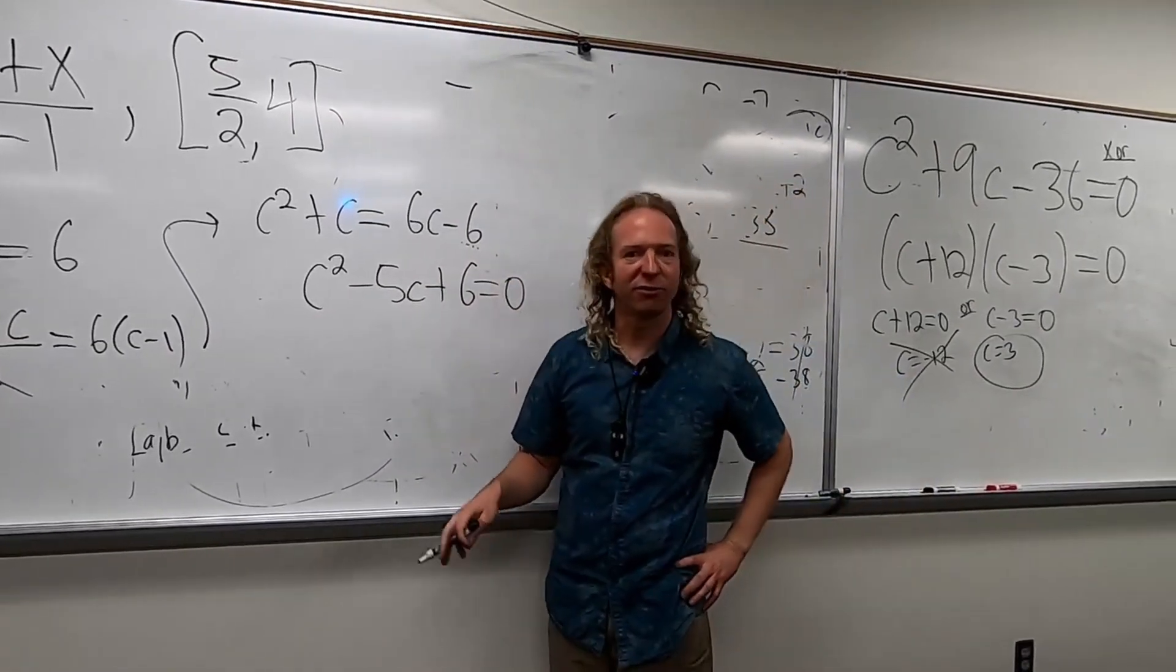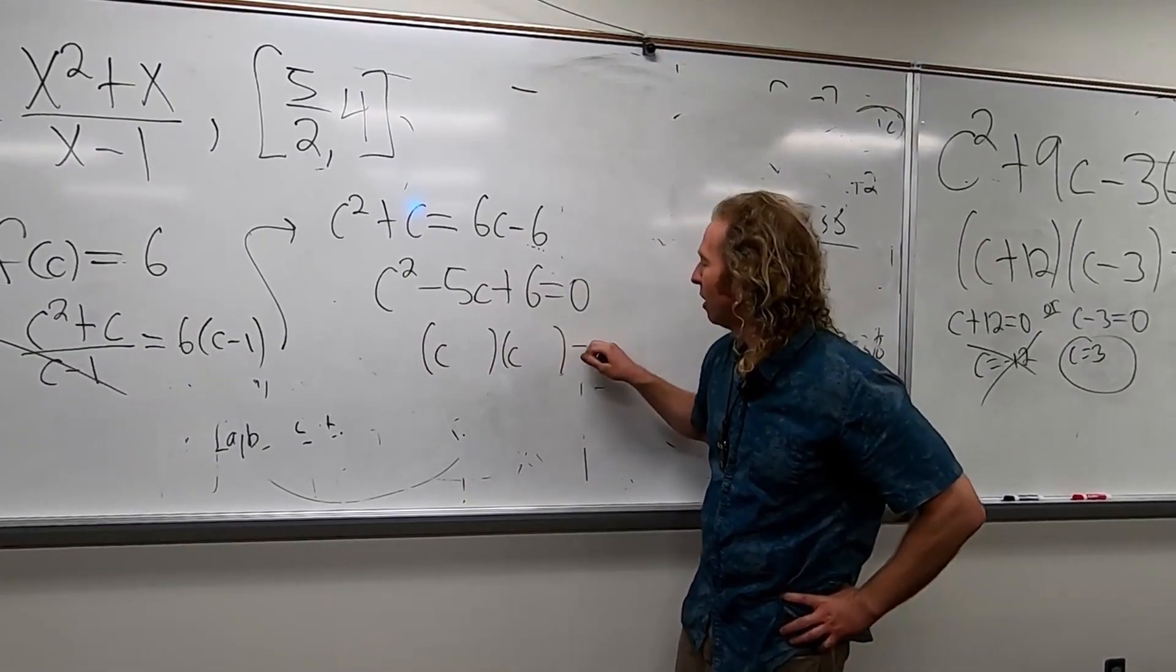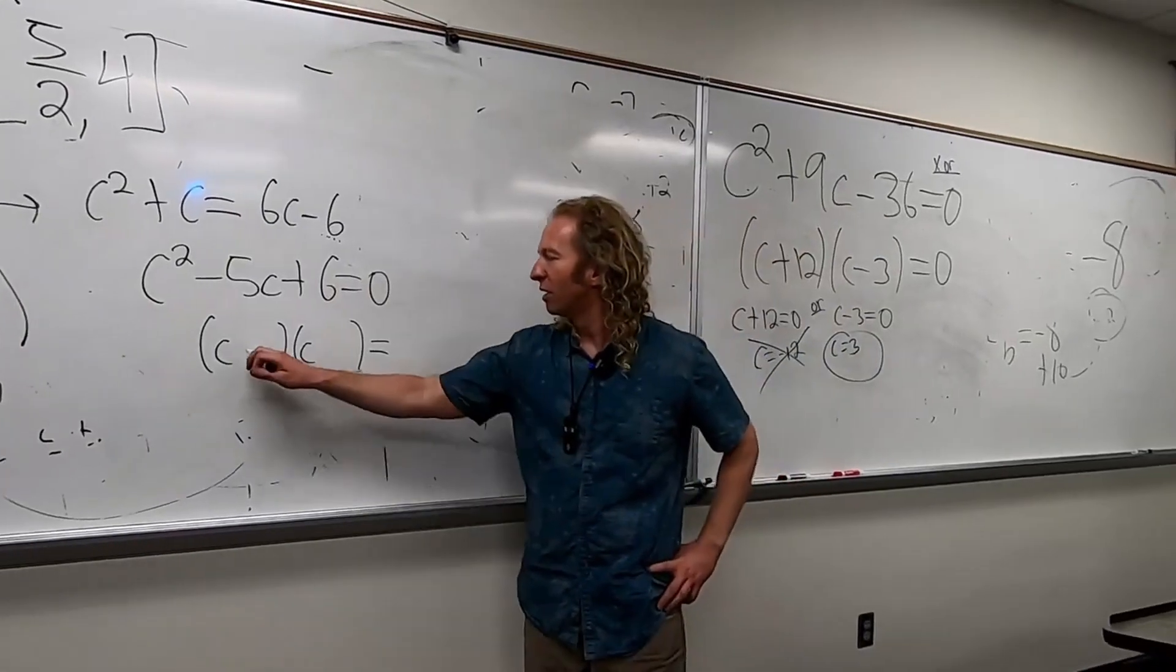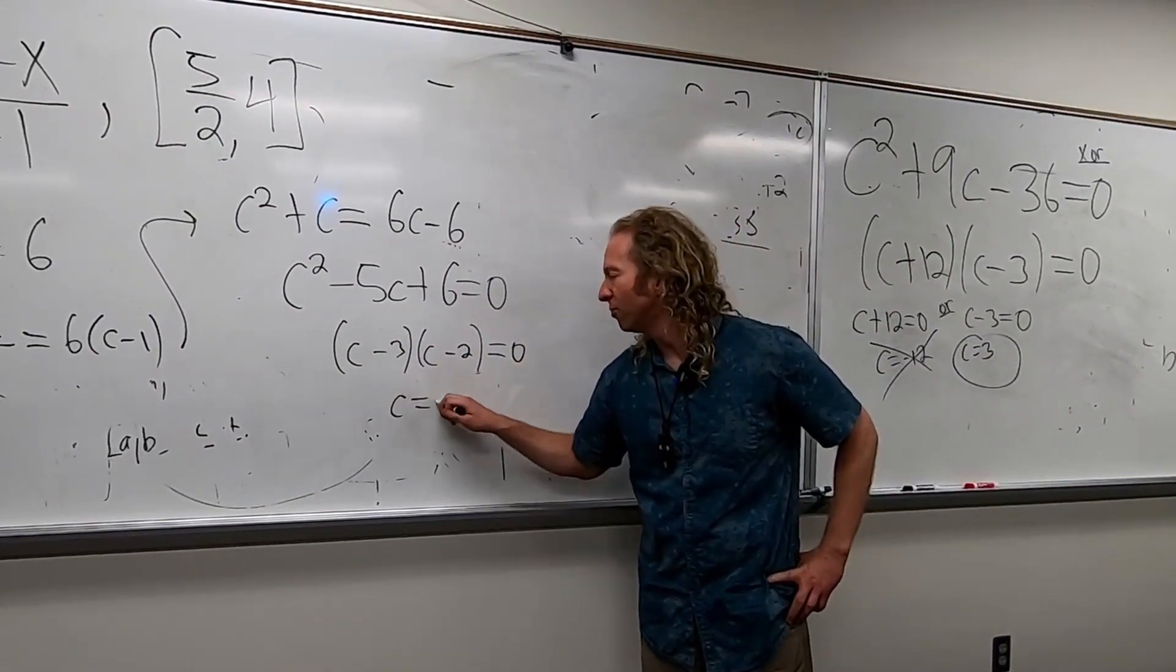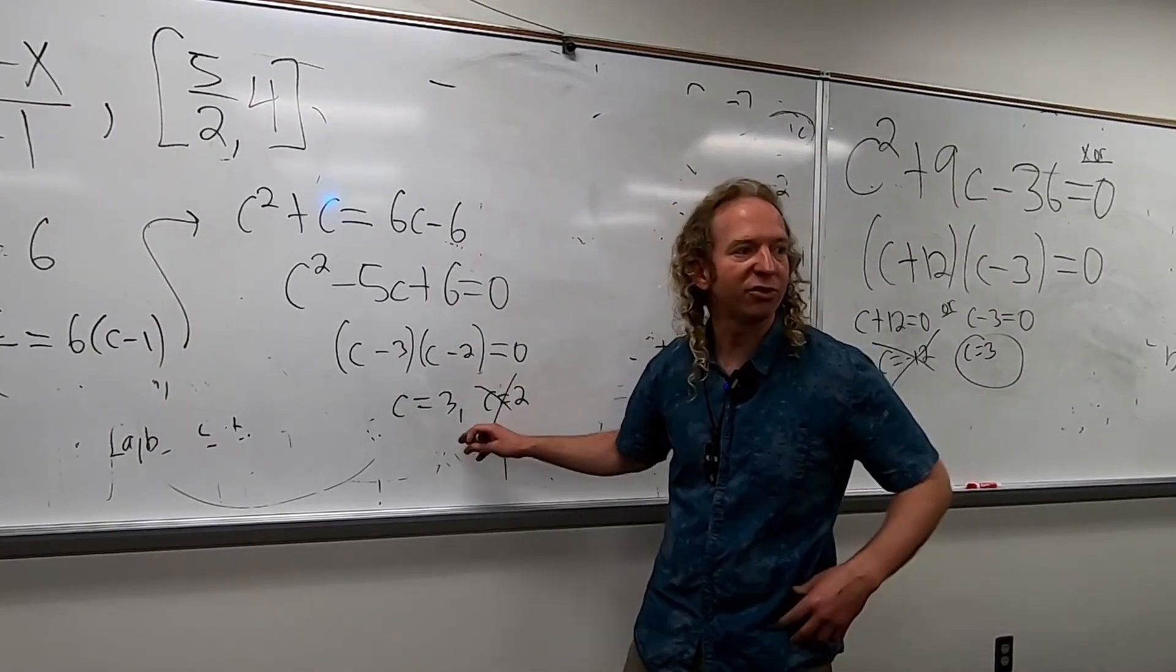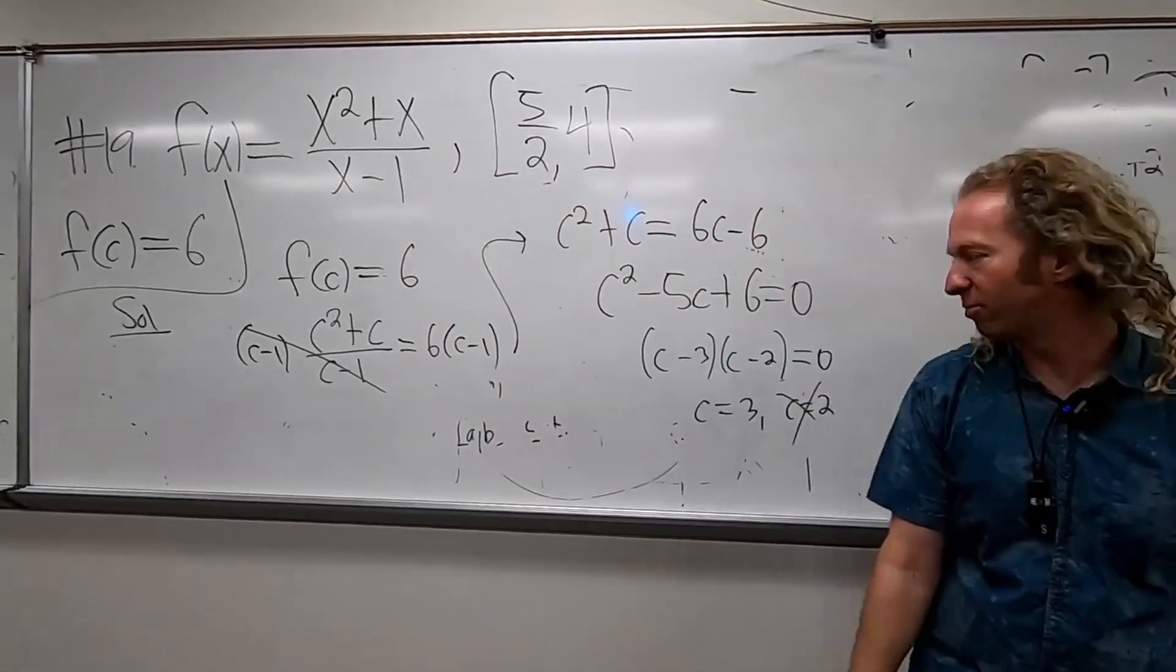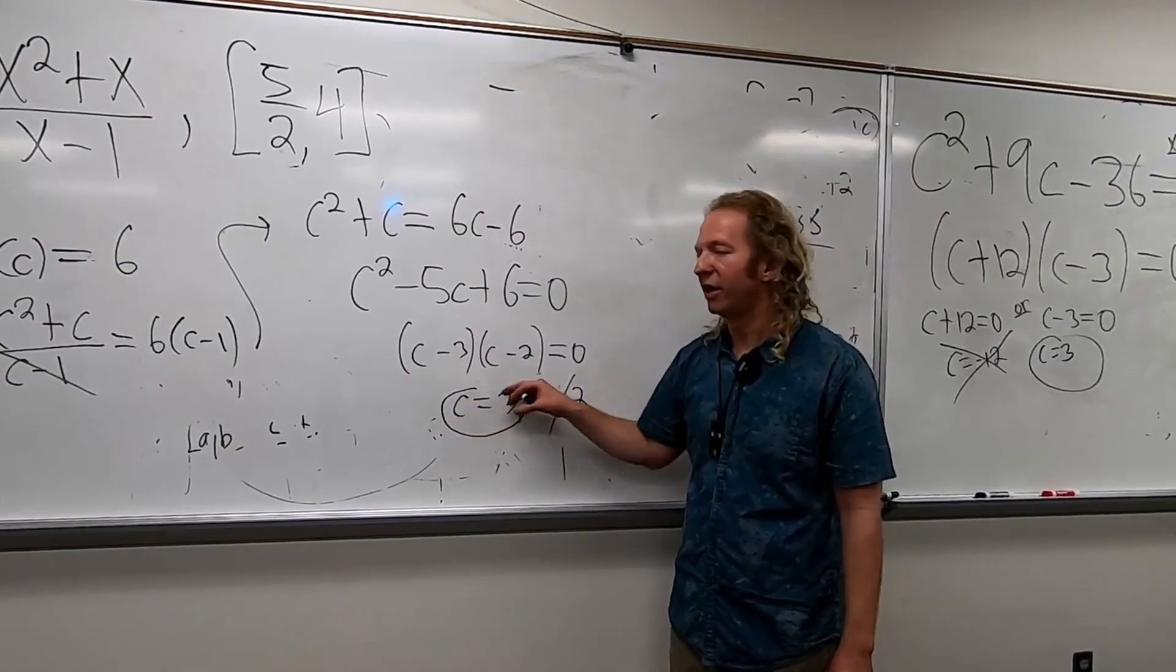And this should factor nicely. This is C, C. We need two numbers that multiply to 6. Negative 3 and negative 2. So we get 3 and 2. Which one do we throw away? 2. Yeah, because 2 is smaller than 2.5, right? So that would be the answer.